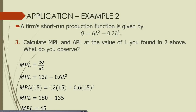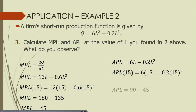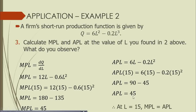Now finding the average product of labor at L = 15: APL = 6L - 0.2L². Substituting L = 15: APL = 6(15) - 0.2(15²) = 90 - 45 = 45. Our observation is that at L = 15, the marginal product of labor equals the average product of labor — both equal 45.